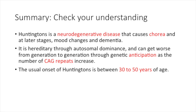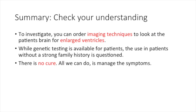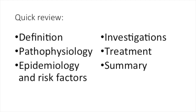Let's summarize Huntington's disease. Huntington's is a neurodegenerative disease that causes extra unwanted movement and, at later stages, mood changes and dementia. It's hereditary through autosomal dominance and can get worse from generation to generation through genetic anticipation as the number of CAG repeats increase on chromosome 4. The usual onset is between 30 to 50 years of age. To investigate, you can order imaging to look at the patient's brain for enlarged ventricles. While genetic testing is available, its use in patients without a strong family history could be questioned. As for now, there is no cure — all we can do is manage the symptoms.